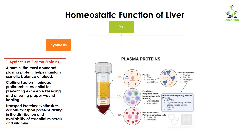Let's study all these functions one by one, starting with synthesis. The first important function of the liver is synthesis of plasma proteins. Plasma is a part of blood, and plasma proteins are present in the plasma. The first plasma protein is albumin — it is the most abundant plasma protein, and its function is to maintain the osmotic balance of the blood, controlling how much water should be present in the blood.